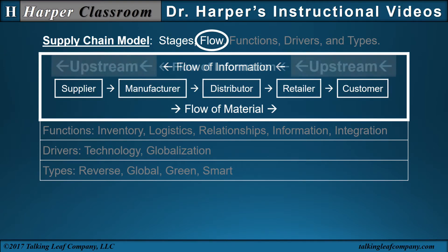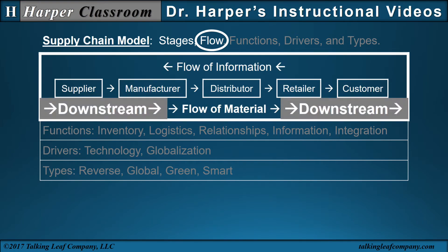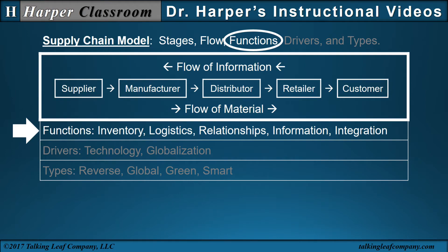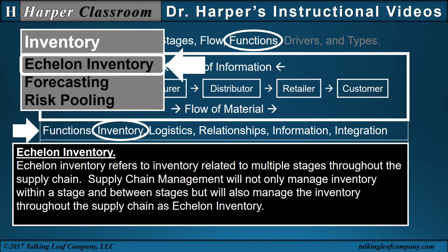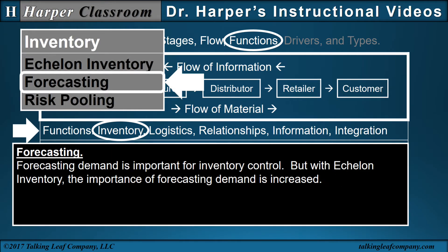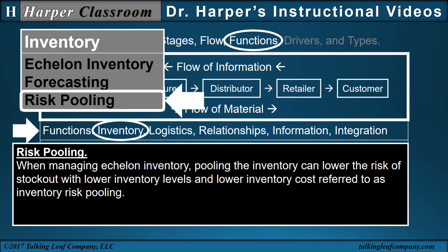Now consider flow. Traditionally, the flow of information is upstream and the flow of material is downstream. Now consider these five functions of managing a supply chain. First, inventory. Echelon inventory refers to inventory related to multiple stages throughout the supply chain. Supply chain management will not only manage inventory within a stage and between stages, but will also manage inventory throughout the supply chain as echelon inventory. Forecasting demand is important for inventory control, but with echelon inventory, the importance of forecasting demand is increased. One key term is risk pooling. When managing echelon inventory, pooling the inventory can lower the risk of stockout with lower inventory levels and lower inventory costs, referred to as inventory risk pooling.